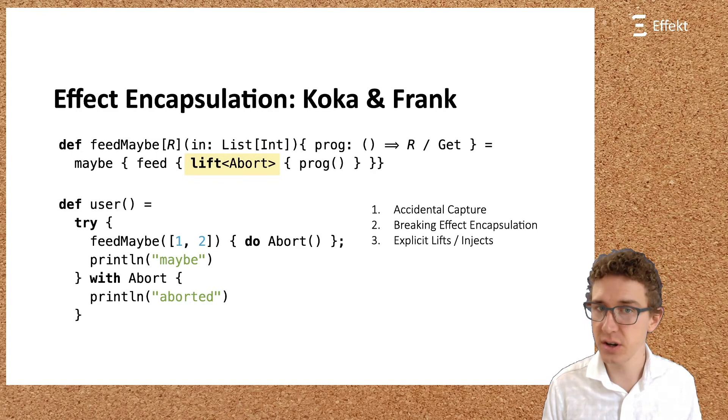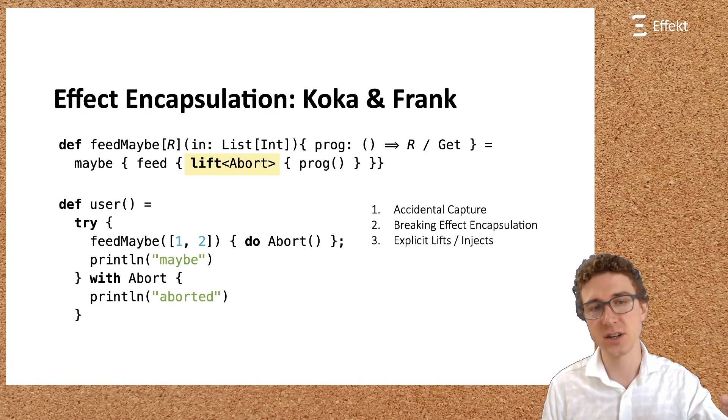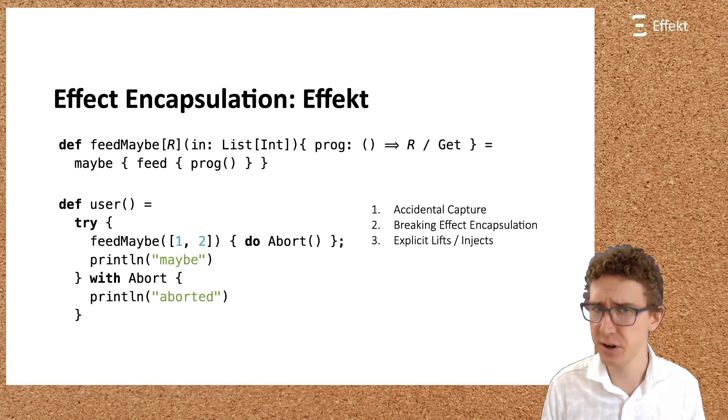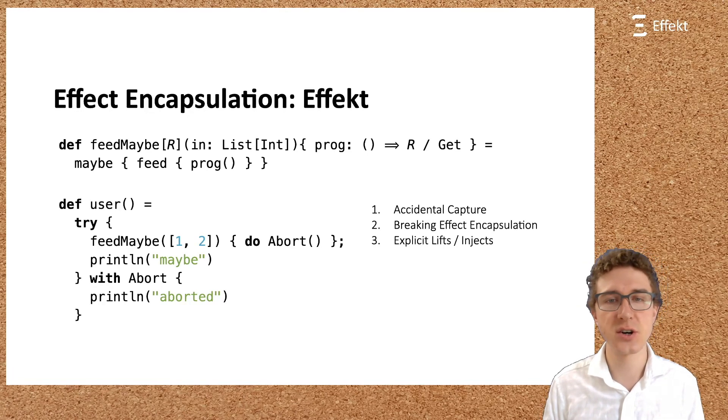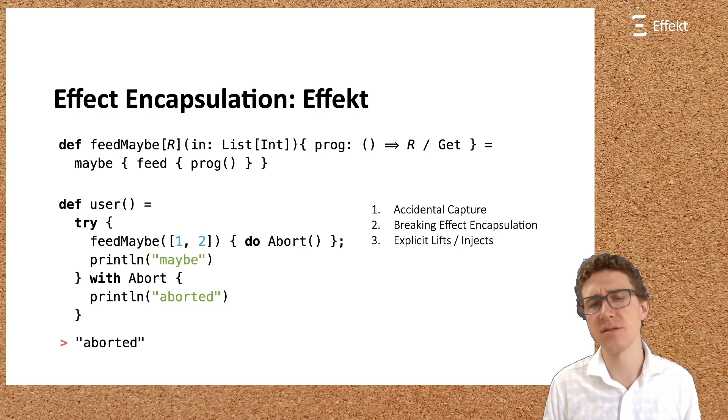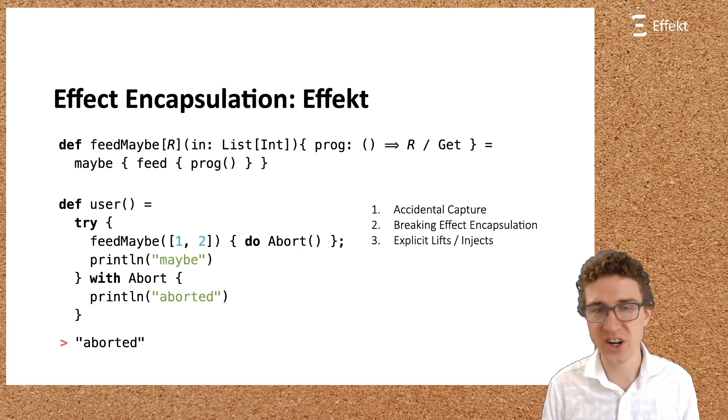In the effect language, the above example just type checks as is. The mandatory effect signature on PROC informs the operational semantics to only bind a capability for GET, but not for abort. The user code correctly closes over the abort capability, and the program prints aborted. To summarize, the combination of type-directed semantics and the translation to capability parsing style allows us to not require any term-level lifting annotations. The semantics just fulfills what the types promise.